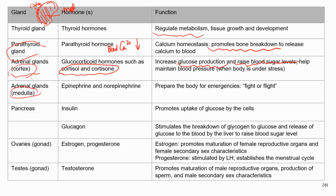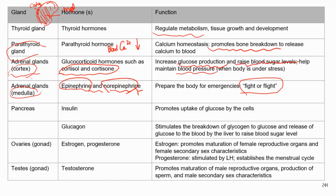The medulla part of the adrenal gland produces epinephrine and norepinephrine. These are involved in sympathetic nervous system control — they prepare your body for emergency situations, the fight-or-flight response.